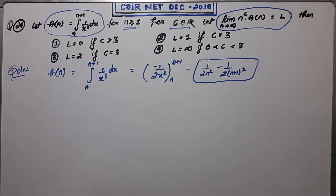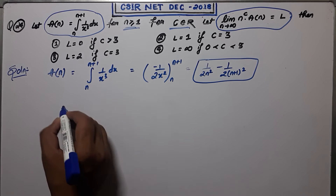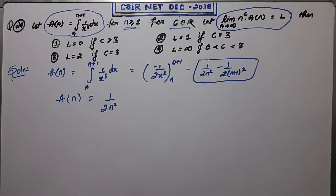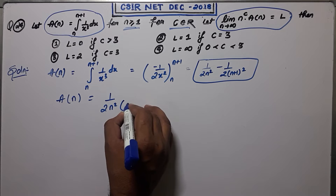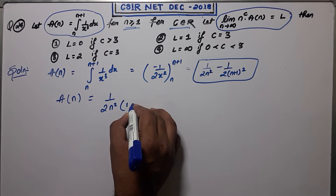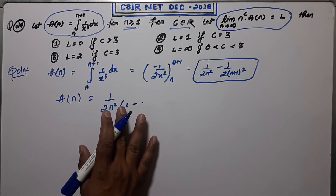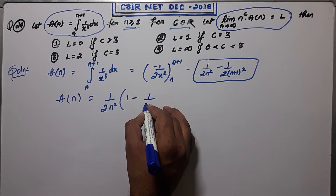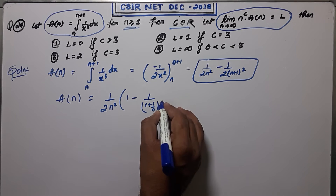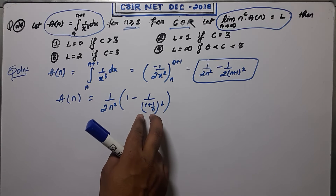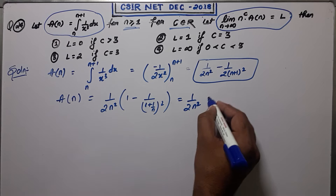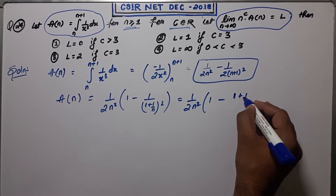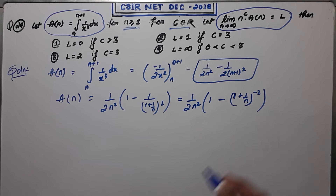Now simplify a_n. Take n² as common: a_n equals 1/(2n²) times [1 minus (1 + 1/n)^(-2)]. Taking the negative power, you get 1/(2n²) times [1 minus (1 + 1/n)^(-2)].